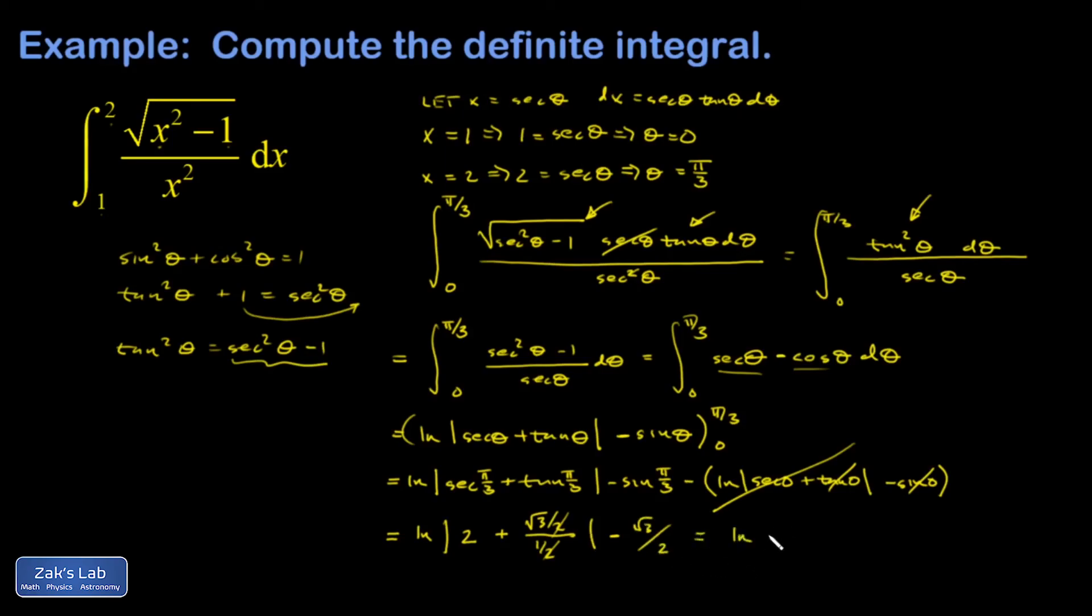So it cleans up to natural log of the absolute value. We don't need the absolute value anymore because we know we're looking at positive numbers. So the natural log of two plus root three minus root three over two.